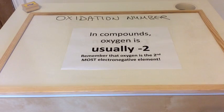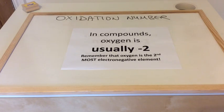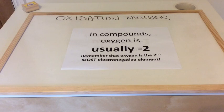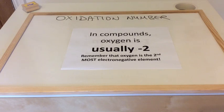We've got a rule for oxygen. When oxygen is found in compounds, it's usually minus two. It's in group six, so it wants two more electrons to complete its outer shell — that explains the two. The reason it's usually minus is that oxygen is the second most electronegative element, so unless it's bonded to fluorine it's going to carry that minus sign in its oxidation number.